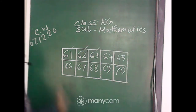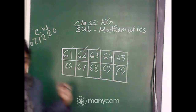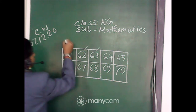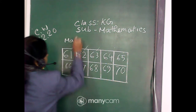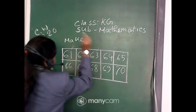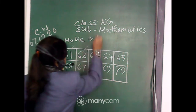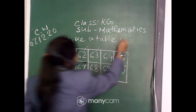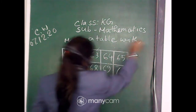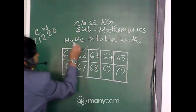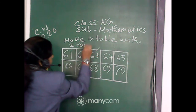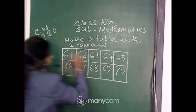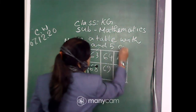Now I have made — the question was: make a table with two rows and five columns.